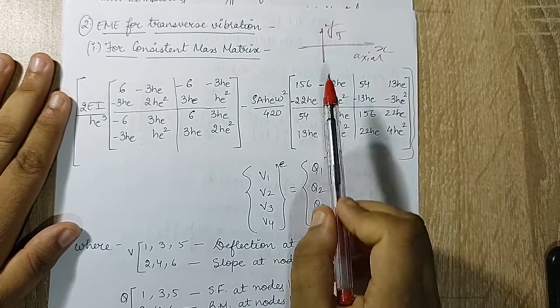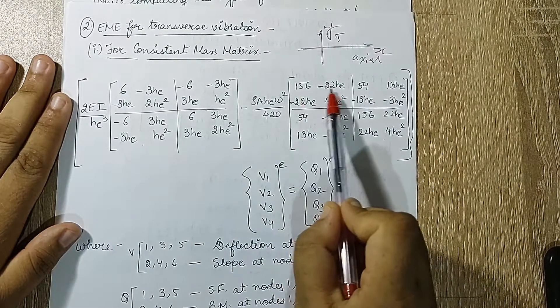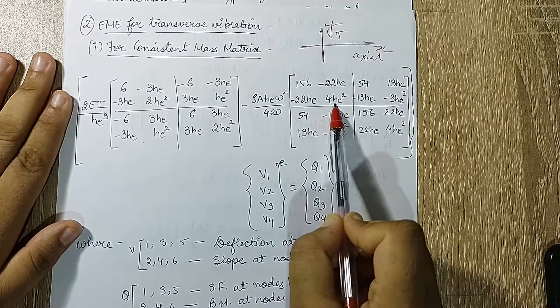In that again, this matrix is what you can remember: [156, -22HE; -22HE, 4HE square].